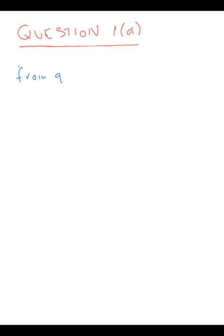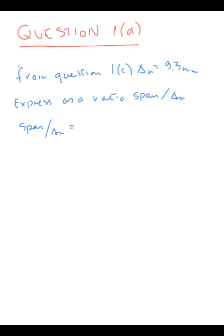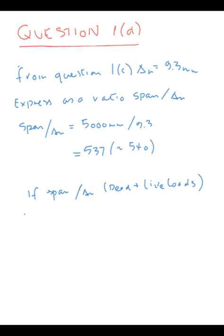Now with question 1d, it's common to assess the magnitude of deflection to express this as a ratio of span over the deflection with consistent units. So we set this up: 5000 over 9.3 from 1c gives 537 circa 540.